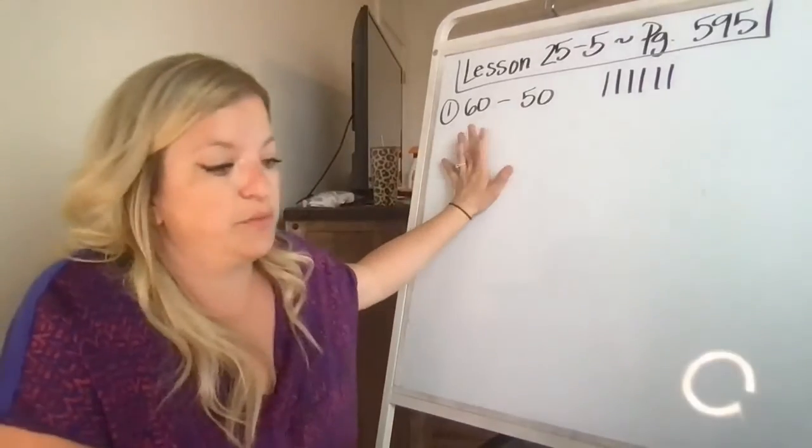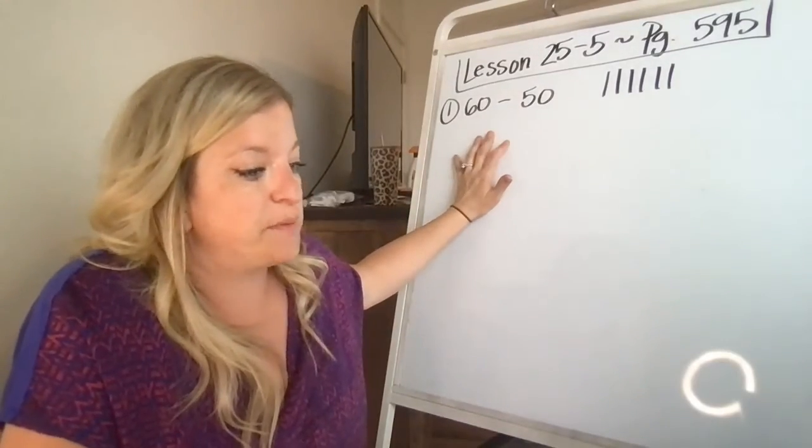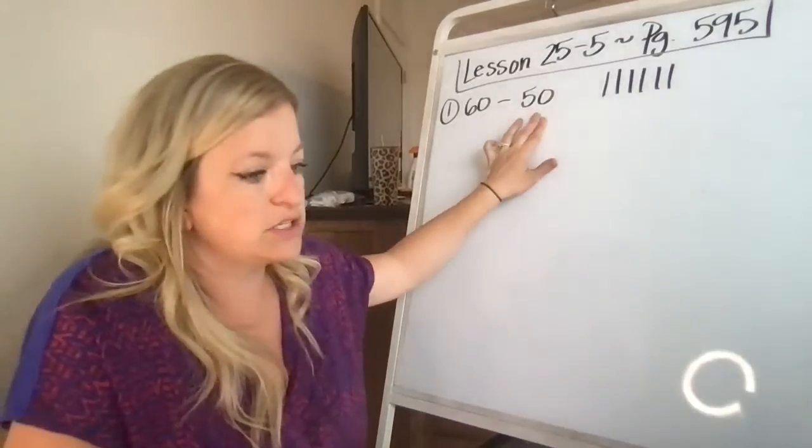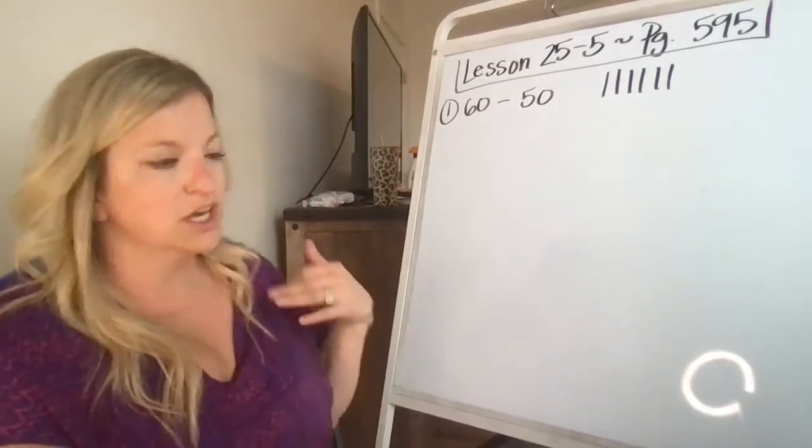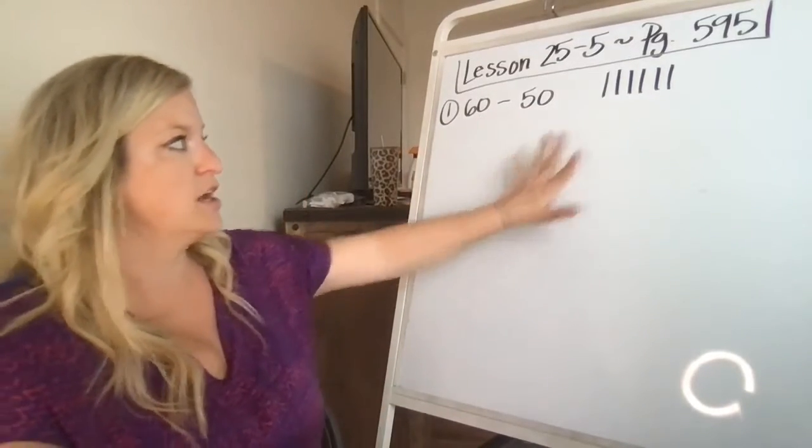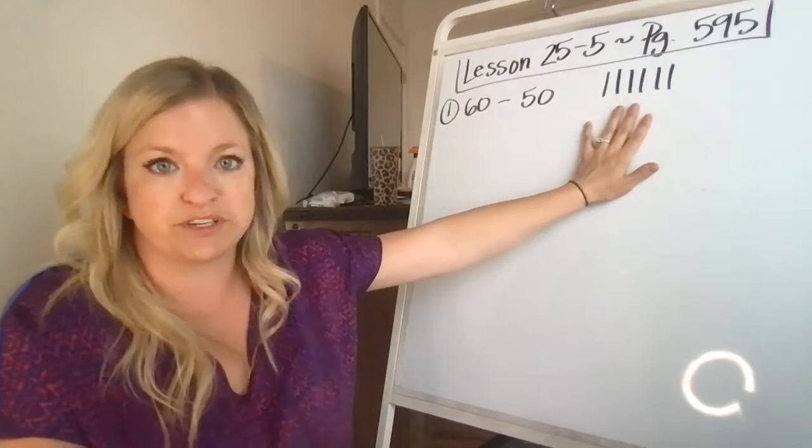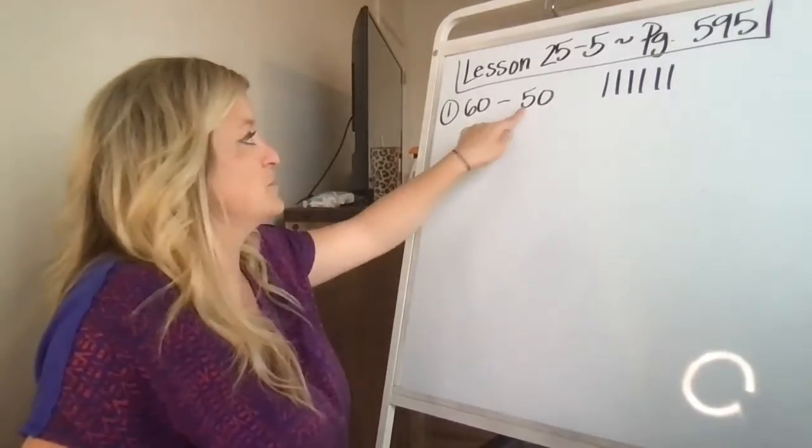So it starts out with number one, which says 60 paperclips, 50 are in a box. How many are not in the box? That means we need to find the difference. So we're subtracting. They have six groups of tens up here. You're going to cross out five.